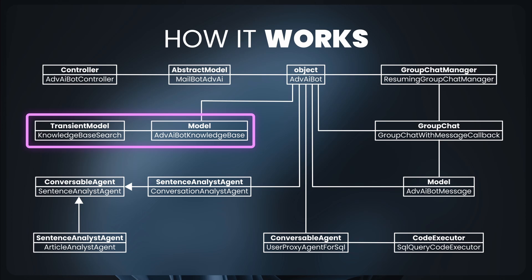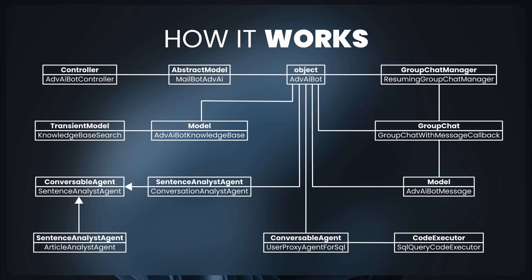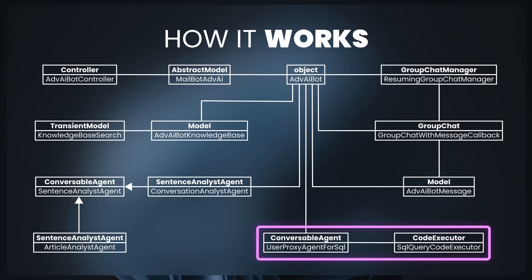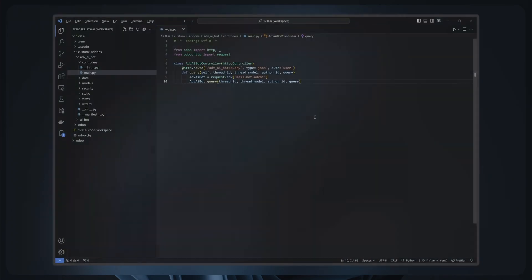Now let's take a look at the classes. We have a custom controller to route user chat messages to the chatbot using an intermediary class. For the RAG we have a couple of classes to help manage information for our knowledge base — they are regular Odoo models: one class to store, retrieve, and process the knowledge base to Chroma DB, and a wizard to test the retrieval function. We'll be using Autogen to develop the chatbot, but we need to extend Autogen first to accommodate a pause and resume mechanism, to run SQL queries, and to analyze conversations, articles, and sentences.